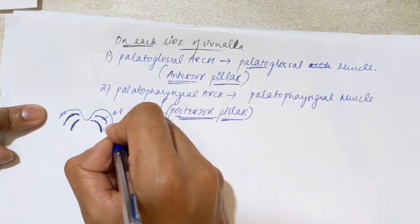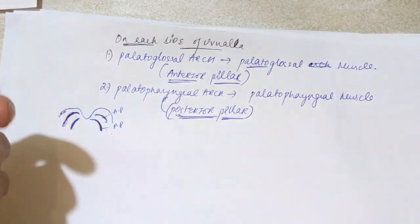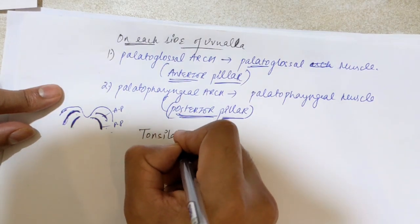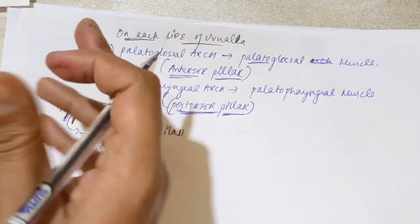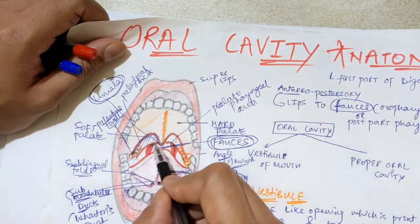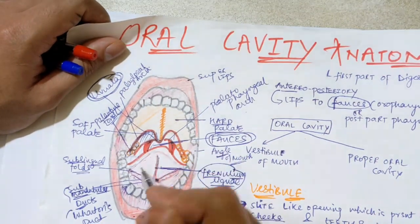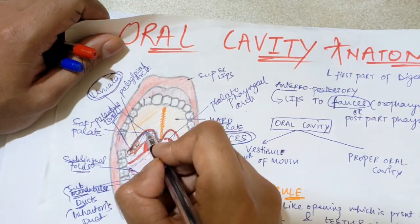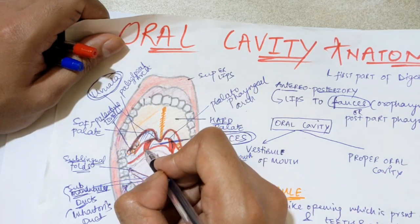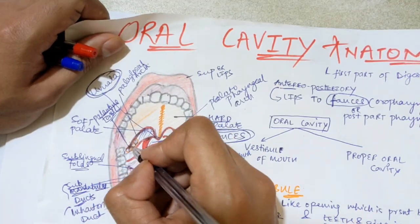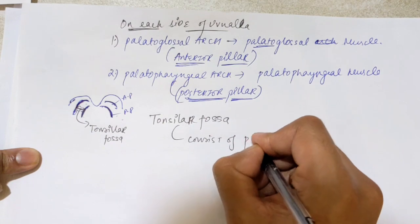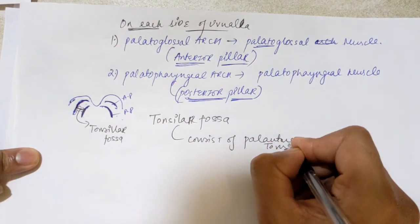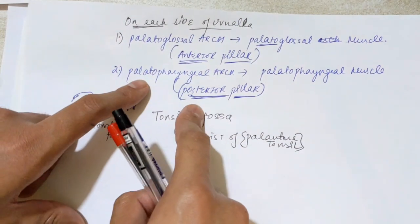Between the anterior pillar (palatoglossal arc) and the posterior pillar (palatopharyngeal arc) there is a tonsillar fossa. You can see in the oral cavity diagram — the uvula in the center, the anterior pillar on each side, and the posterior pillar behind it. Between these two pillars is the tonsillar fossa, which contains the palatine tonsil, made up of lymphoid tissue.